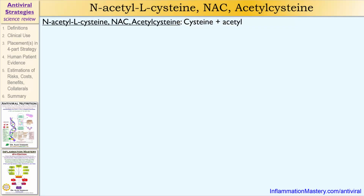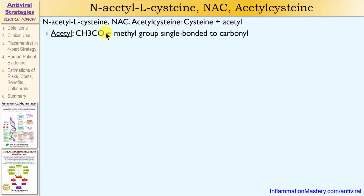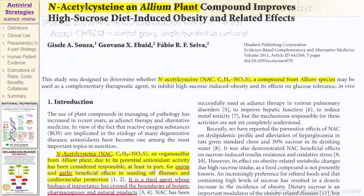Now let's dive into N-acetyl L-cysteine, NAC, or acetylcysteine. As the name suggests, acetylcysteine is simply the amino acid L-cysteine with an extra acetyl group. The acetyl group itself is actually quite small, as you can see represented here.